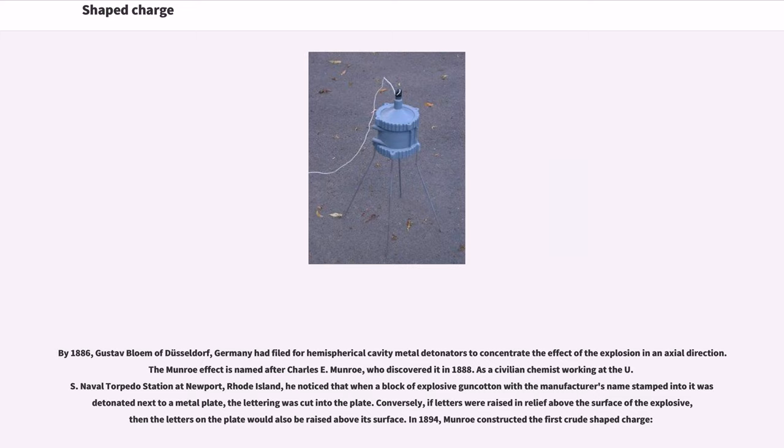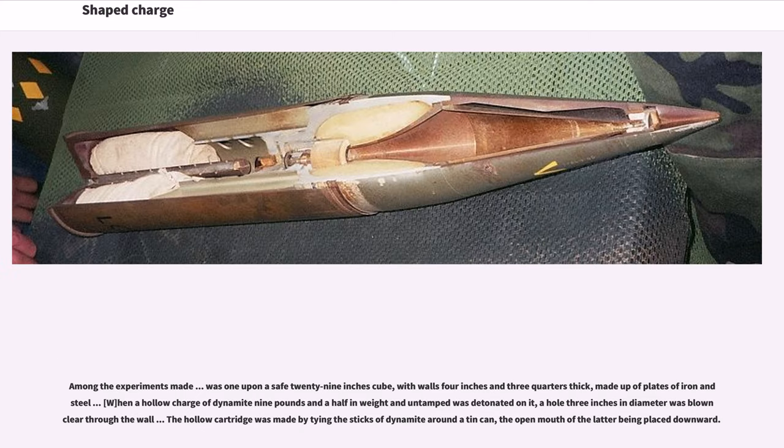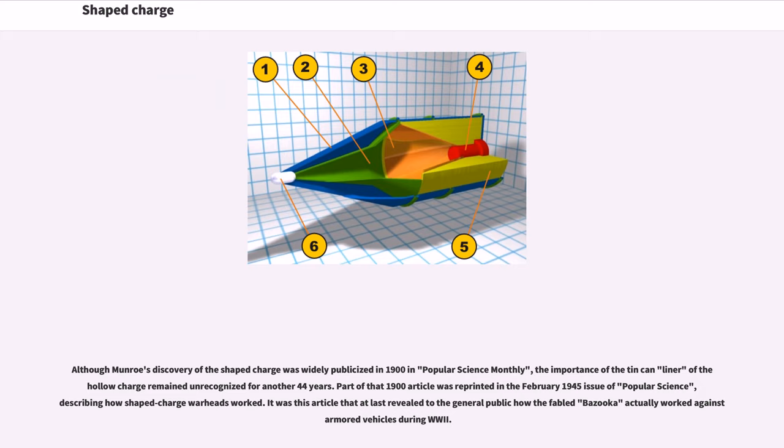In 1894, Monroe constructed the first crude shaped charge. Among the experiments made was one upon a safe 29 inches cube with walls 4 inches and three-quarters thick, made up of plates of iron and steel. A hollow charge of dynamite 9 and a half pounds in weight and untamped was detonated on it. A hole 3 inches in diameter was blown clear through the wall. The hollow cartridge was made by tying the sticks of dynamite around a tin can, the open mouth of the latter being placed downward. Although Monroe's discovery of the shaped charge was widely publicized in 1900 in Popular Science Monthly, the importance of the tin can liner of the hollow charge remained unrecognized for another 44 years. Part of that 1900 article was reprinted in the February 1945 issue of Popular Science, describing how shaped charge warheads worked. It was this article that at last revealed to the general public how the fabled bazooka actually worked against armored vehicles during World War II.